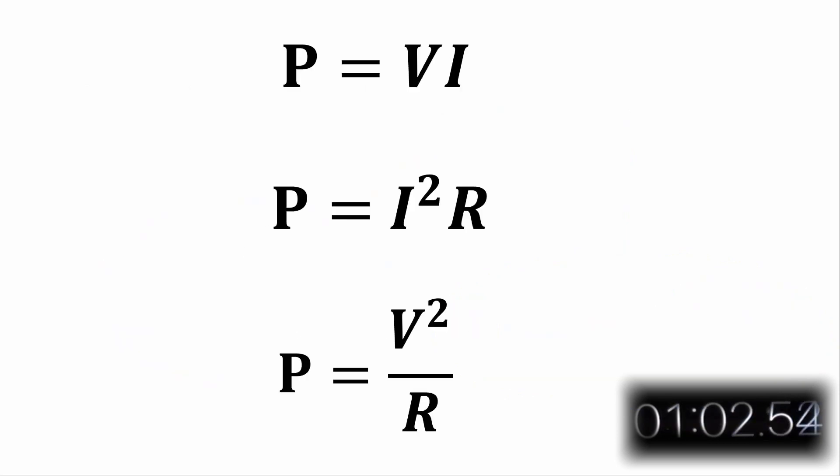So for a resistor, the power equation can take three different forms. P equals V times I, P equals I squared R, and P equals V squared over R.